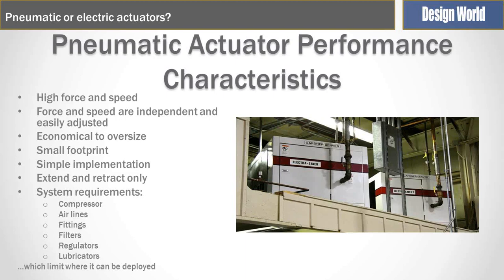A lot of times people go a larger size rather than reducing air pressure to achieve the force they need. Pneumatics have a very small footprint and are relatively easy to implement. A disadvantage is that they are usually extend and retract only. Although closed-loop pneumatic cylinders with position feedback exist, in general they are extend and retract only. There is also a rather involved pneumatic system around the actuators — you require a compressor, airlines, filters, regulators, and lubricators — all of which must be in the vicinity of the installation, limiting where pneumatic actuators can be deployed.